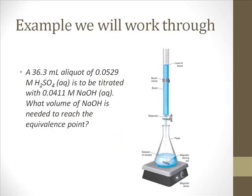We're going to work through this video using a specific example. Imagine that you are doing chemistry homework and you're faced with a problem that reads like this: you have a specific volume, 36.3 mL, of sulfuric acid at a concentration of 0.0529 moles per liter. That sulfuric acid solution is going to be titrated with a sodium hydroxide solution at a concentration of 0.0411 moles per liter. The question asks: what volume of sodium hydroxide will be needed to reach the equivalence point?